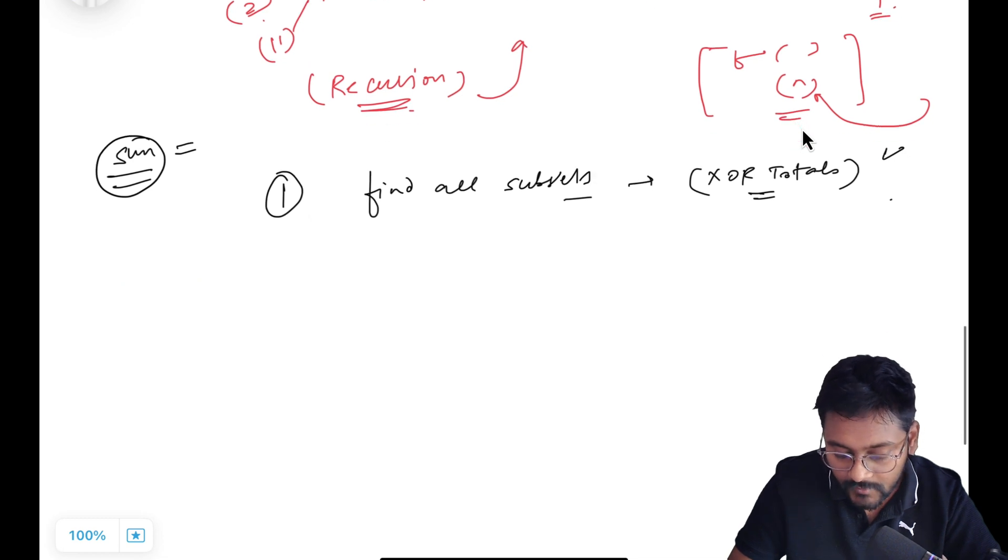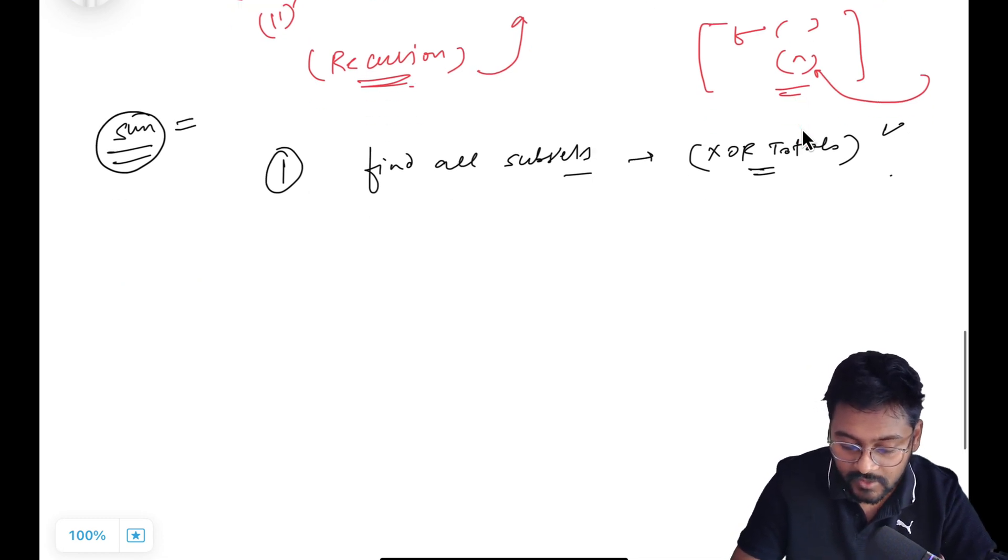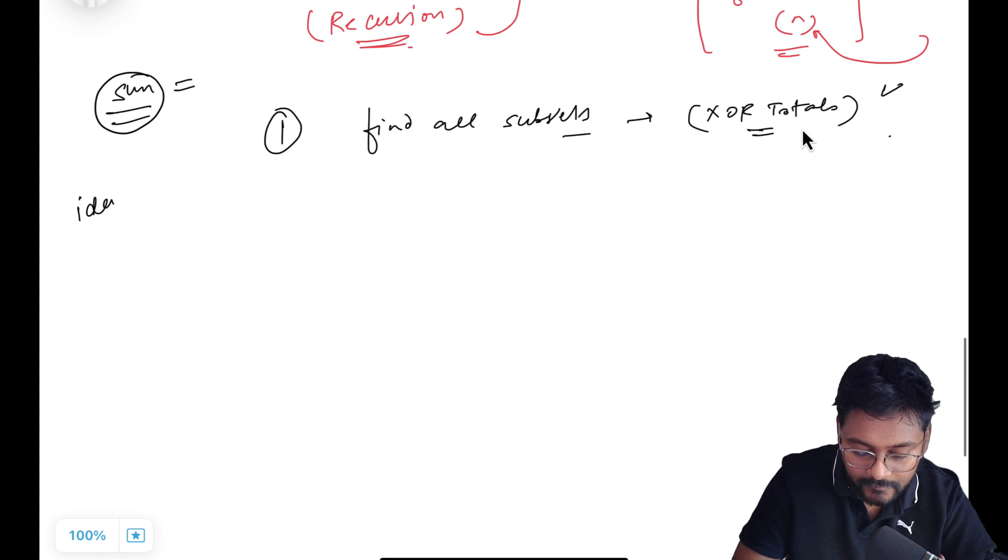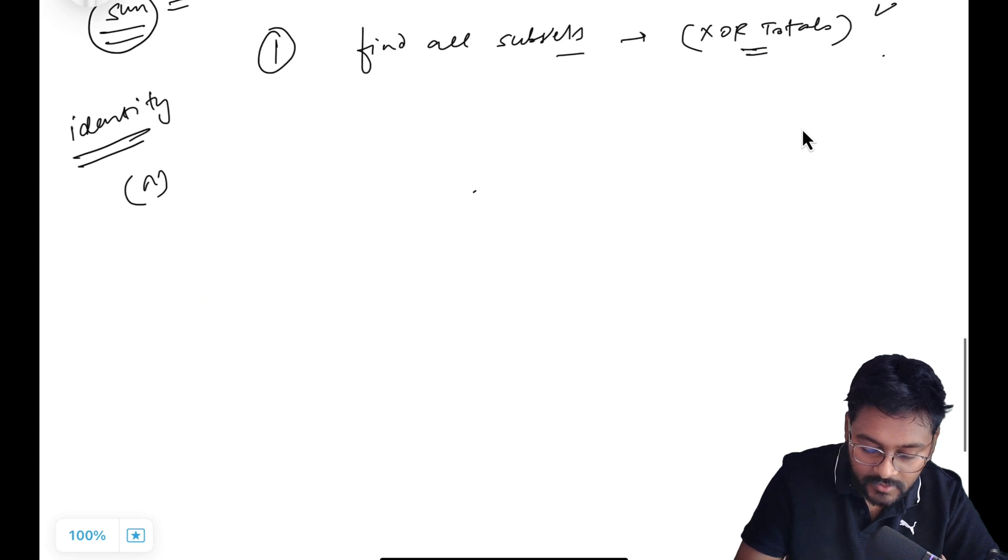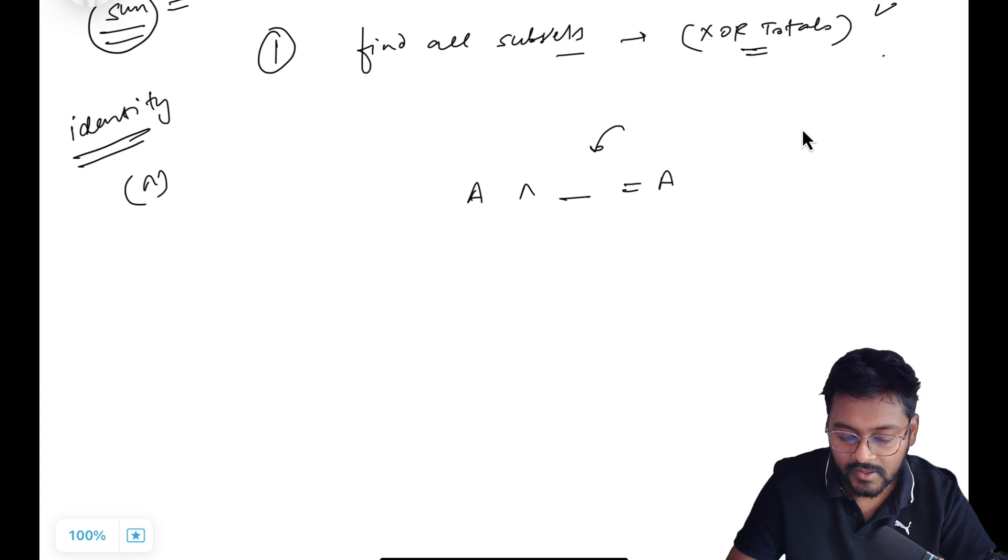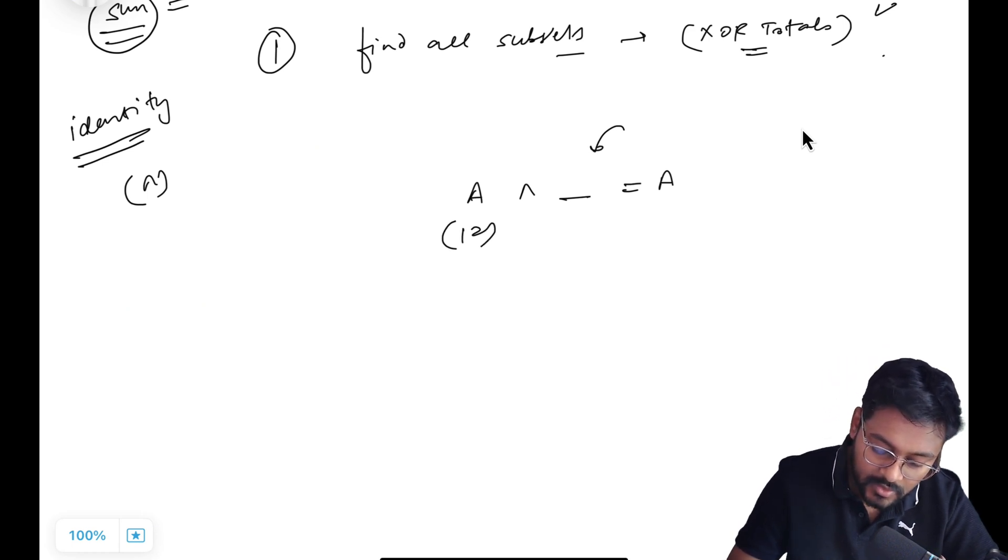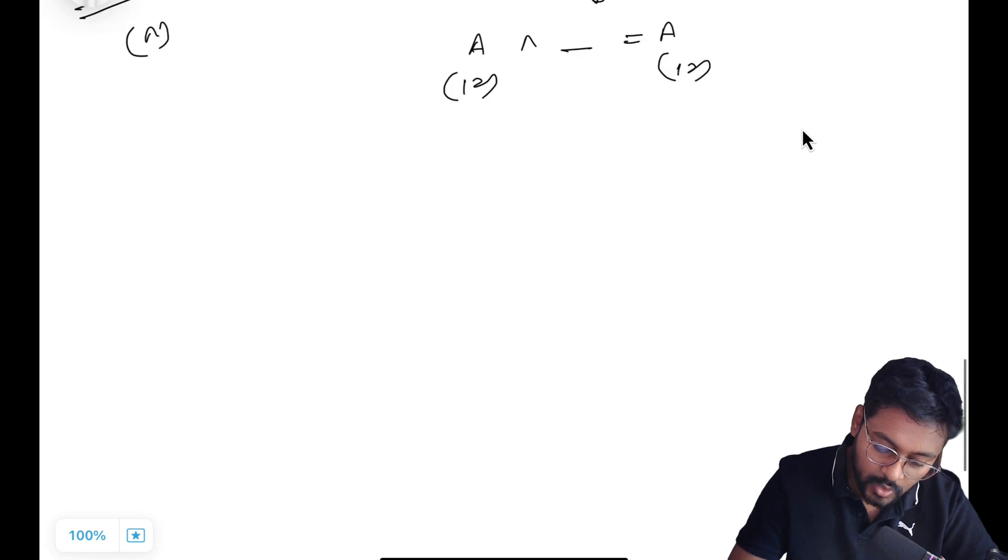So sum should be initialized with what value? Whenever we are initializing something with sum, we have to initialize it with identity. And what is the identity of XOR operator? If I am taking XOR of A with someone and I am getting A, so this is the identity. Identity property we are going to use. Let's say A is 12, I want 12.